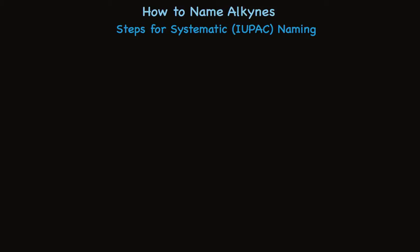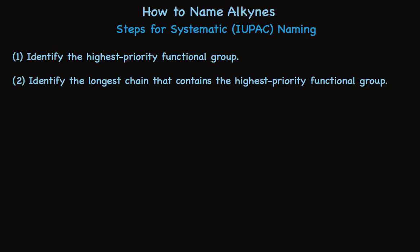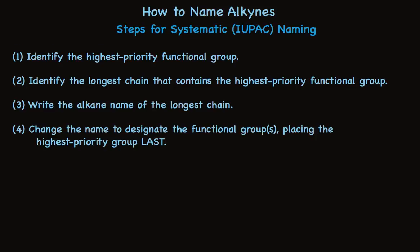The rules for naming alkynes by the systematic nomenclature, the so-called IUPAC names, are the same as the rules we use for alkenes. Step one is to identify the highest priority functional group, and the second step is to find the longest chain that contains that highest priority functional group. Once you've done that, you count the carbons in that longest chain and give the molecule the appropriate alkane name for that length of chain. Then you change the end of that alkane name to designate the functional groups that are in the molecule. You put the highest priority functional group last.